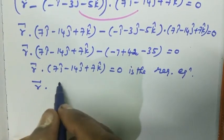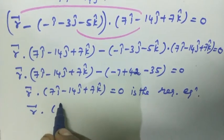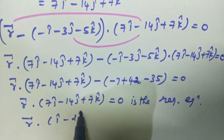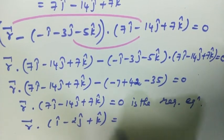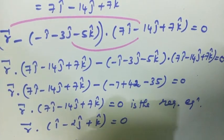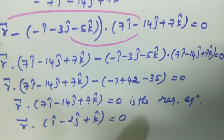R vector dot 7i cap minus 14j cap plus 7k cap equal to 0. This is the required equation. Thank you.